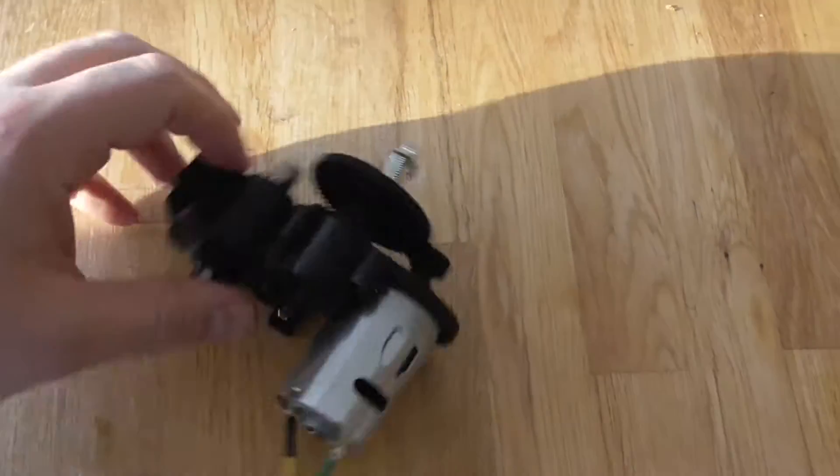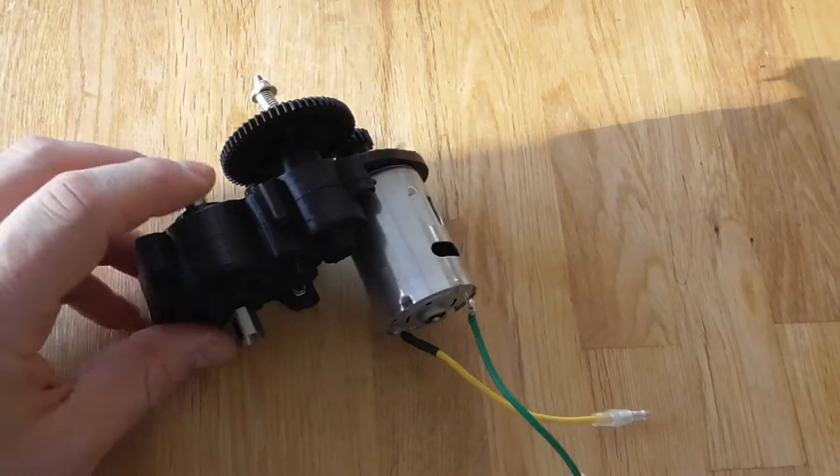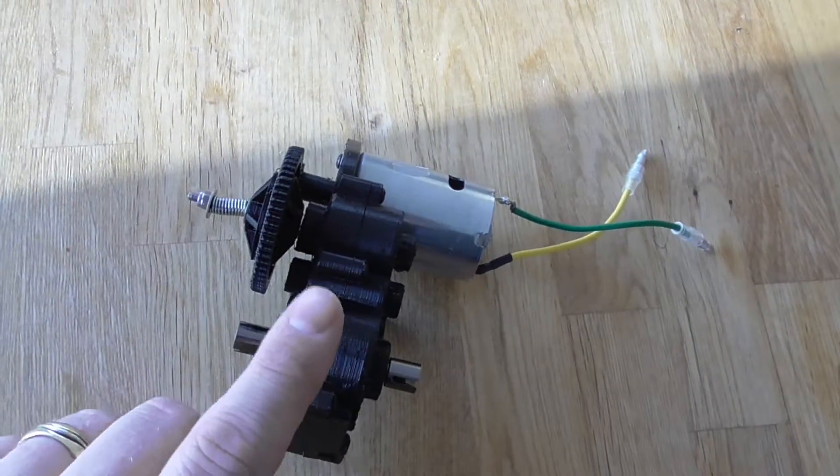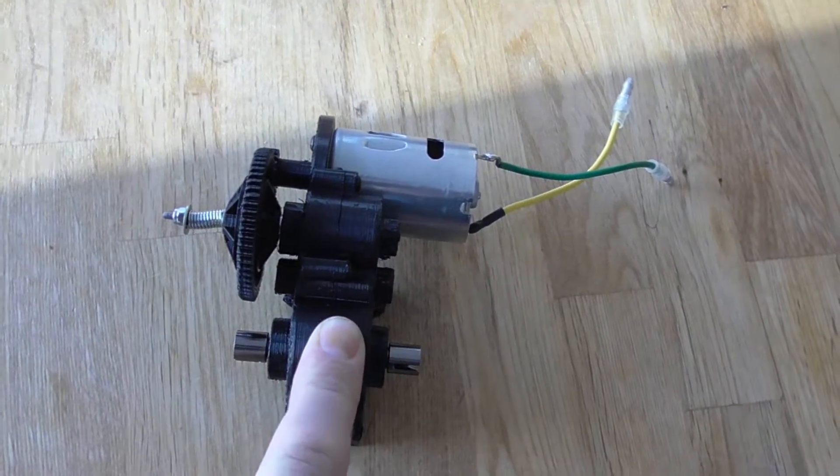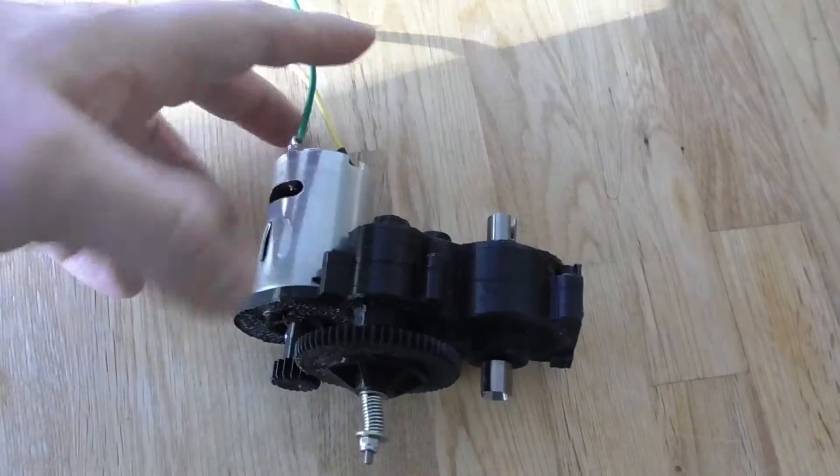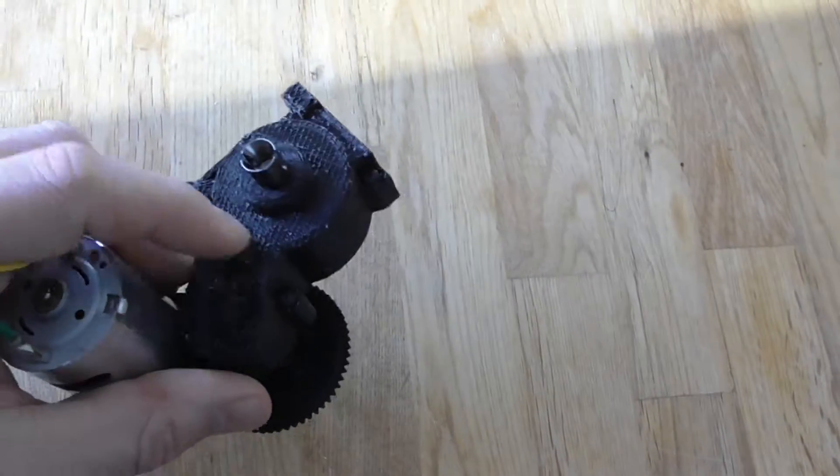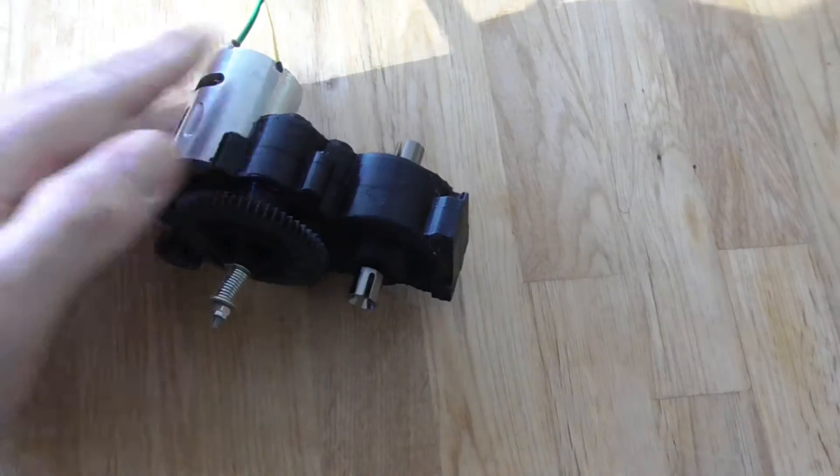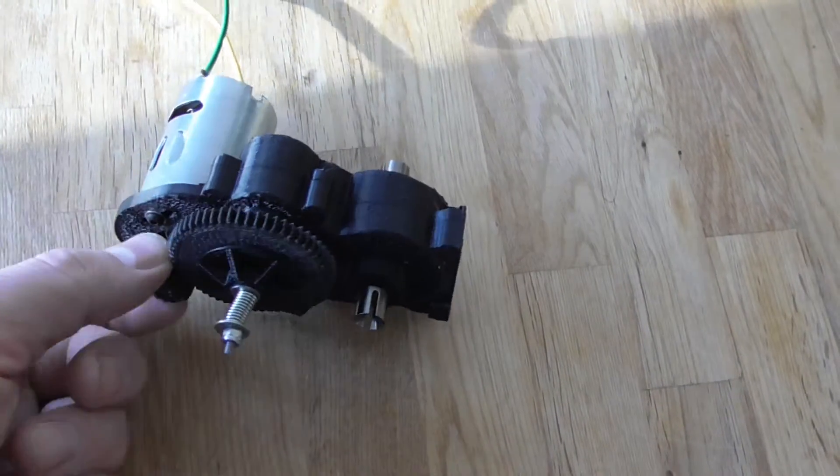This is my 3D printed gearbox. The out gears and the differential gear inside here aren't 3D printed, but all the other gears are, so the two inside gears here, the spur and the pinion are all 3D printed.